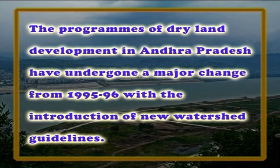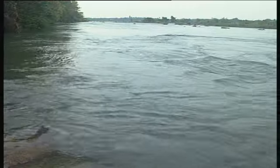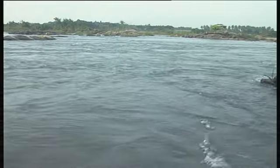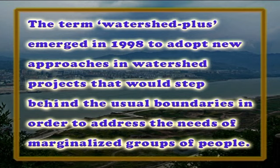The Integrated Wasteland Development Program made afforestation and soil and moisture conservation in wastelands under government, community or private control its predominant activity, without much focus on saturation of complete micro-watersheds and participation of people. The programs of dry land development in Andhra Pradesh underwent a major change from 1995-96 with the introduction of new watershed guidelines. The common basic objective is land and water resource management for sustainable production. The term 'watershed plus' emerged in 1998 to adopt new approaches in watershed projects to address the needs of marginalized groups such as those with no land, women and the poorest of the community.